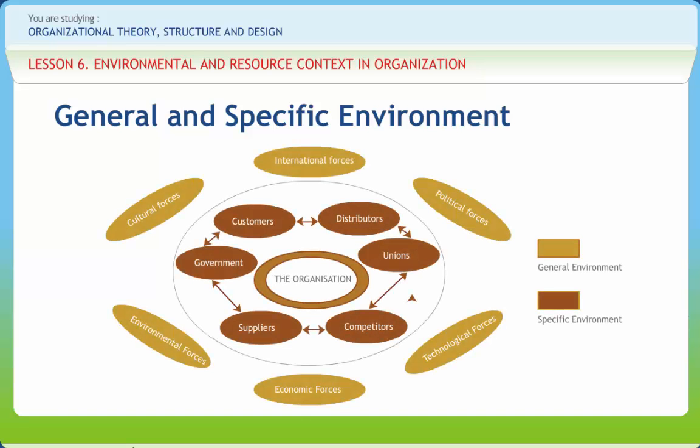The customer, the distributors, the unions, the competitors, the suppliers, and the government form the specific environment. An organization attempts to structure its transactions with the environment to protect and enlarge its domain so that it can increase its ability to create value for its stakeholders like shareholders, employees, and customers. Customer satisfaction is the ultimate aim of all economic activity, involving more than the offer of products at the lowest possible price. An important force in the environment is the suppliers, who supply inputs like raw materials and components. The associations formed by workers are known as trade unions. A firm's competitors include not only firms that market the same or similar products, but also those who compete for the discretionary income of consumers.